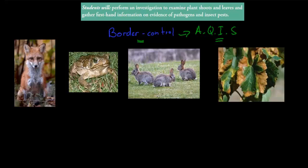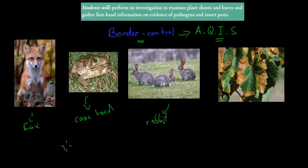So these are introduced species: the fox, which in this picture is quite cute; the cane toad, which is not that cute; and the rabbit. These are all introduced species that came actually legally — we thought it would be a good idea to bring them. This was quite a long time ago. Now we know more about introduced species, but we want to make sure that introduced species don't come from overseas, from different countries, because they can cause havoc to our natural ecosystems, which these have.